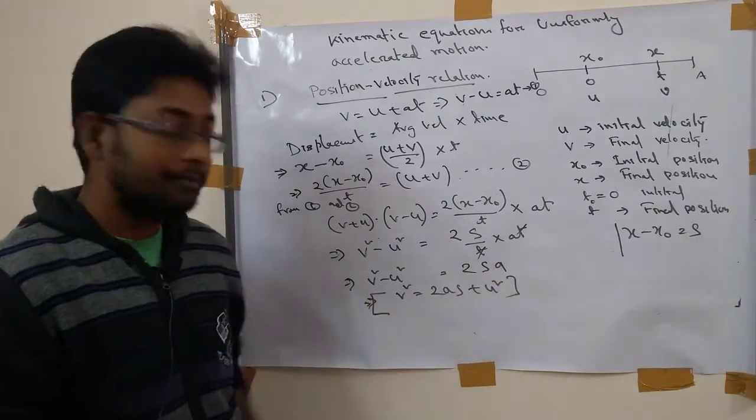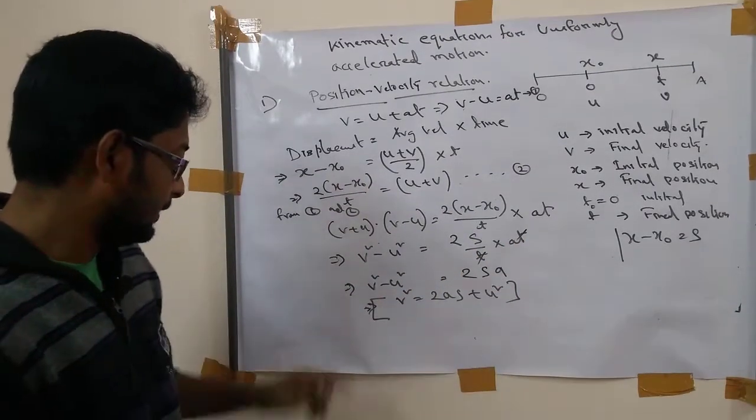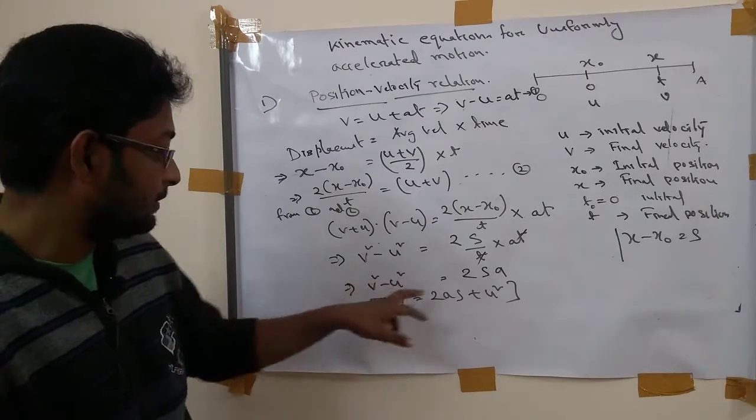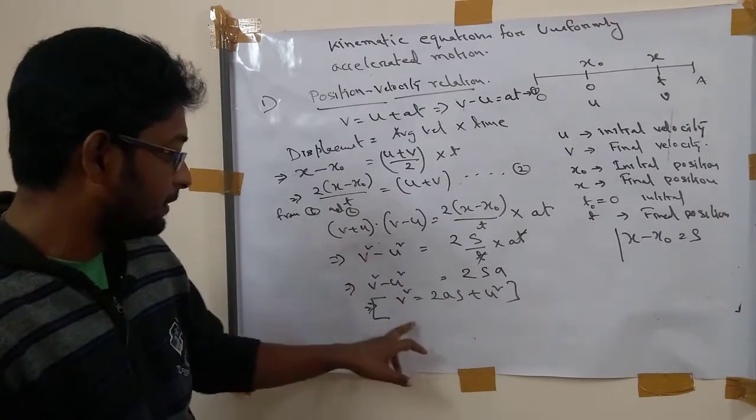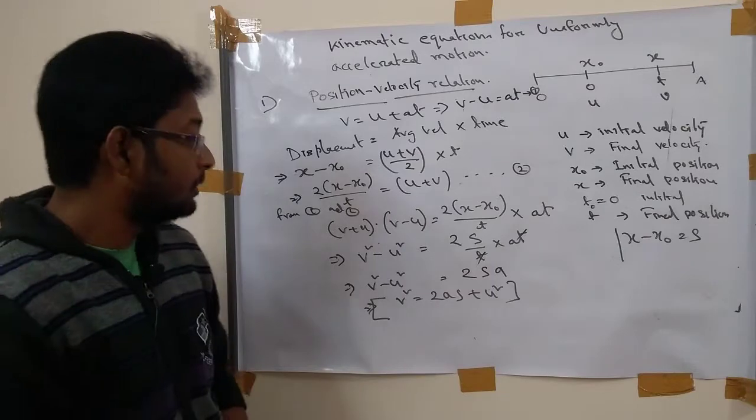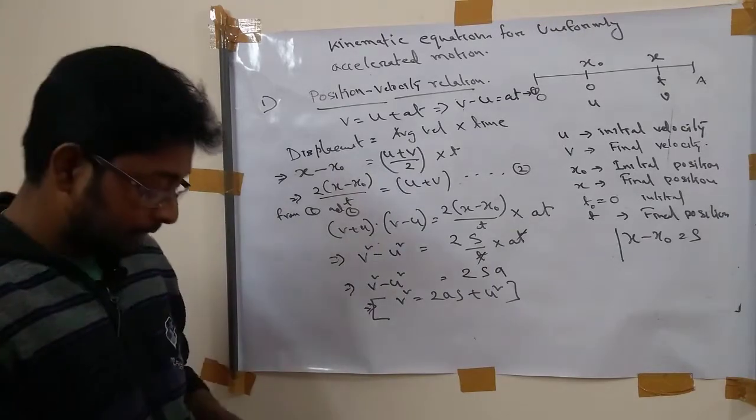When t cancels, ultimately we are getting v square minus u square equal to 2as. And we can get v square equal to 2as plus u square. This is the position velocity relationship.